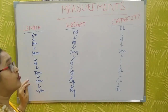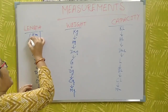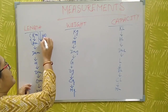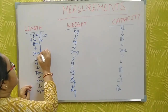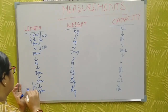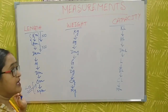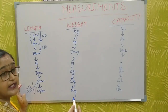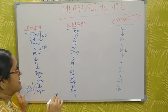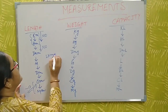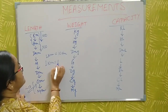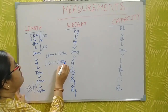Now, when we go downwards, each step you multiply by 10. When you go upward, each step you divide by 10. For example, when you convert kilometer to hectometer, you multiply by 10. So one kilometer is 10 hectometers. And one kilometer is 1,000 meters — because you go three steps down.